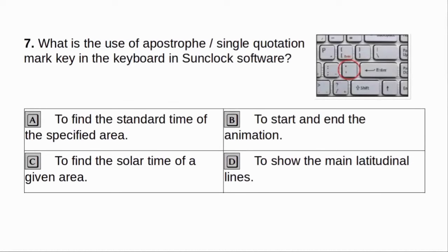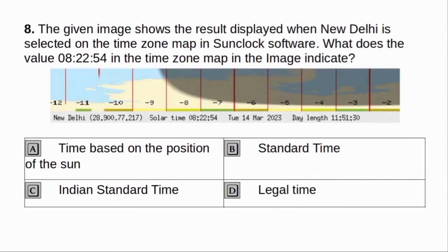What is the use of the apostrophe or single quotation mark key on the keyboard in SunClock software? A. To find the standard time of the specified area. B. To start and end the animation. C. To find the solar time of a given area. D. To show the main latitudinal lanes. Answer: B. To start and end the animation.